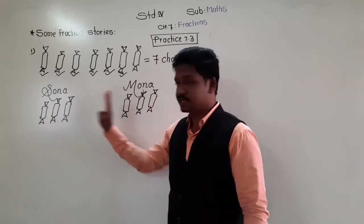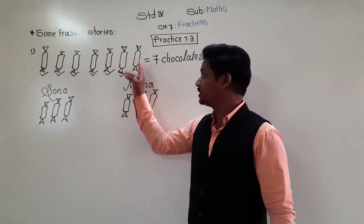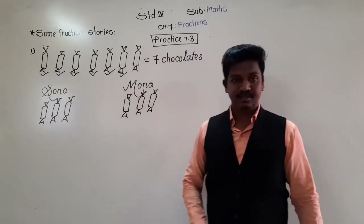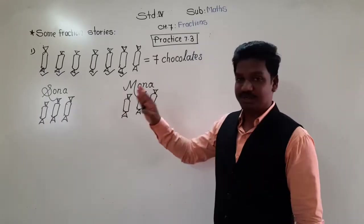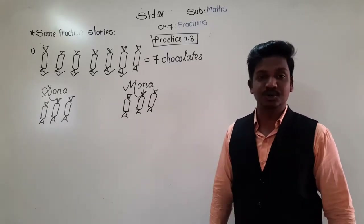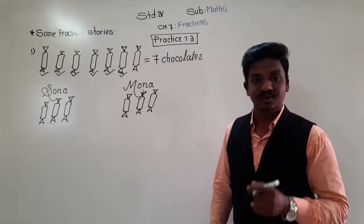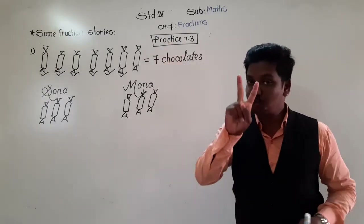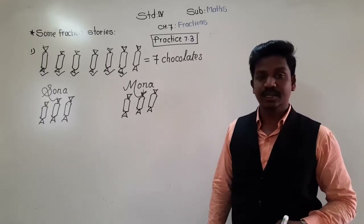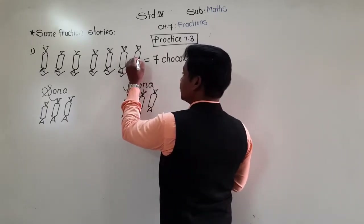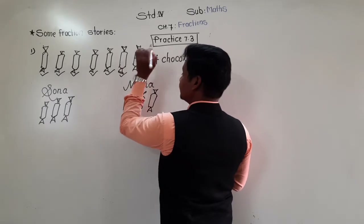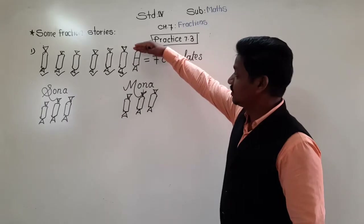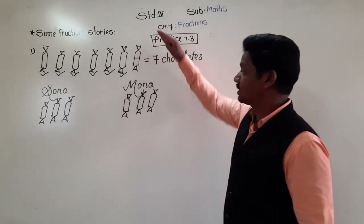Only 1 chocolate is left. We cannot give the whole chocolate to Sona because then Sona will get 4 and Mona will get 3 — that's not fair. So the option is: we can divide the last chocolate into 2 equal parts. We will cut it into 2 equal parts and give 1 half to Sona and 1 half to Mona.